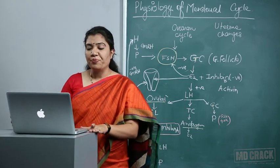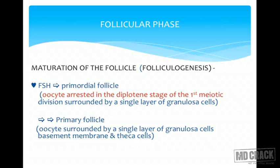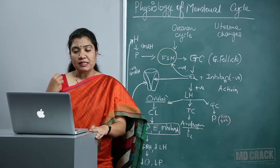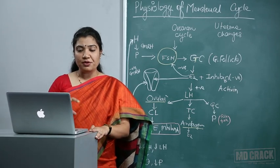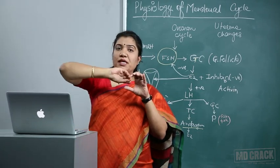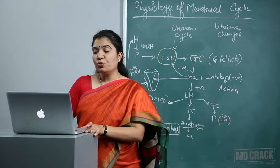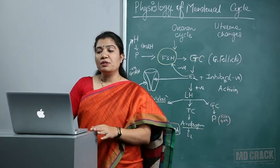The primary follicle forms with the oocyte surrounded by a single layer of granulosa cells, a basement membrane, and theca cells. The secondary or pre-antral follicle has the oocyte surrounded by zona pellucida and several layers of granulosa and theca cells. In the tertiary or antral follicle, fluid accumulates in a cavity called the antrum; the oocyte is eccentric in position, surrounded by granulosa cells called the cumulus oophorus — meaning it is about to leave the ovary.